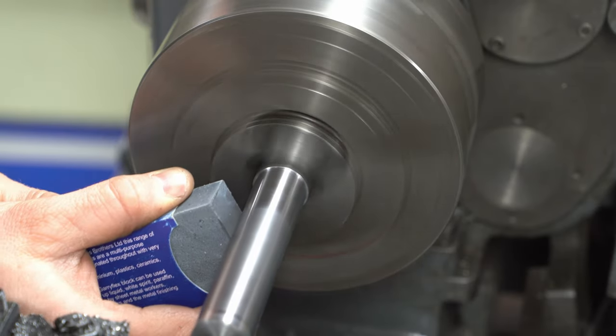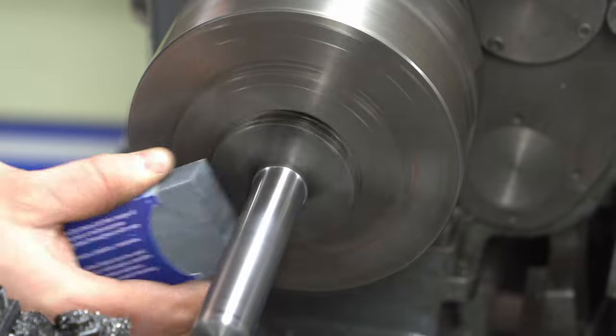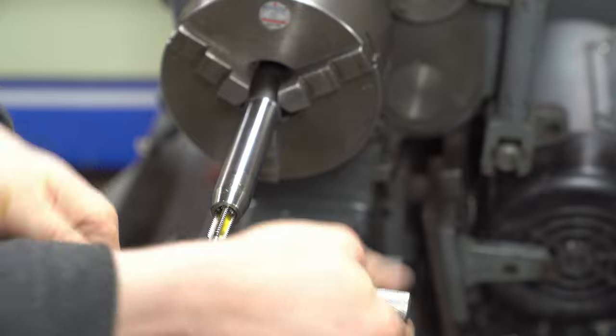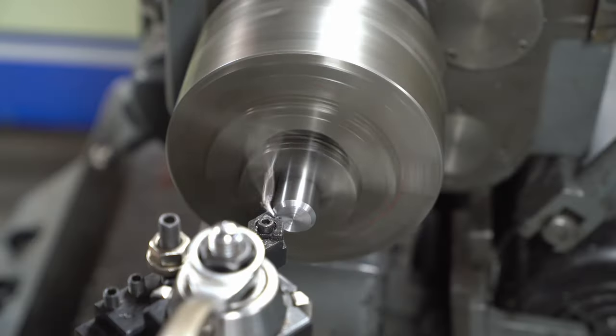Here we're working on the handle. I'm using Garyflex abrasive rubber which I quite like. I think it's similar to Cratex. I tapered that handle, drilled and tapped it, parted it off and chamfered the top.